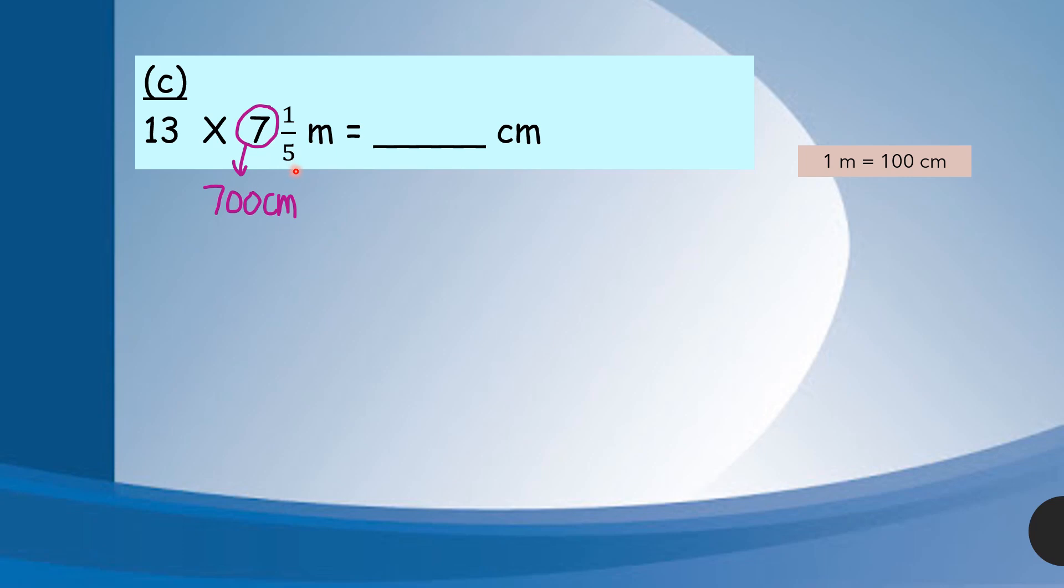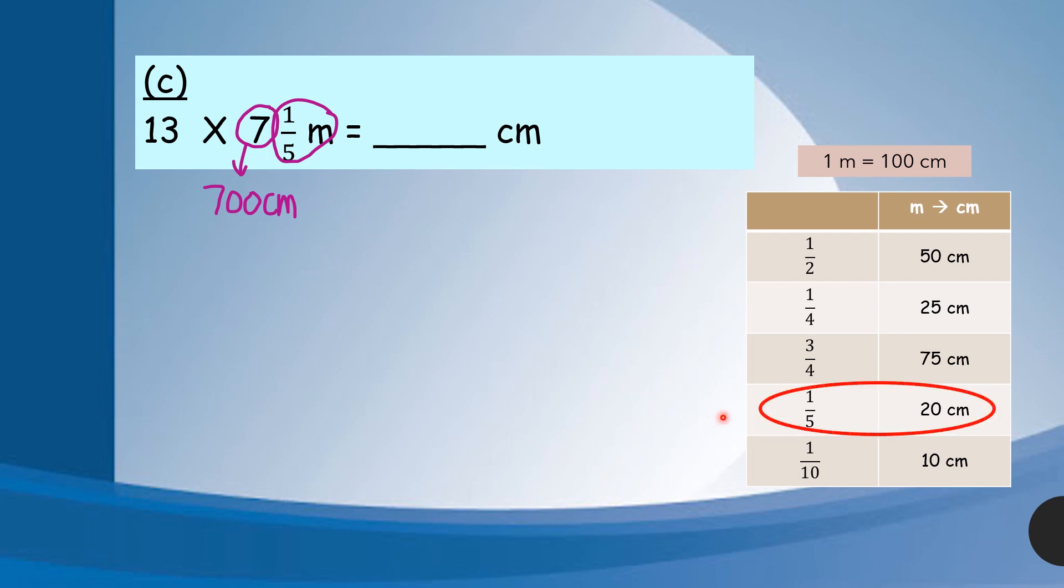After that, I add up. I get 700 plus 20 is 720. Then only I times with 13.